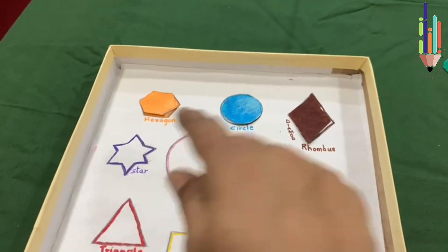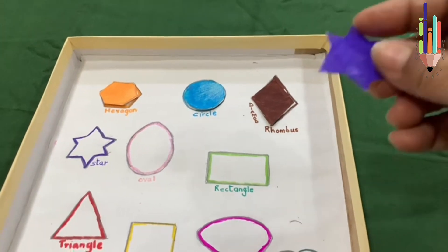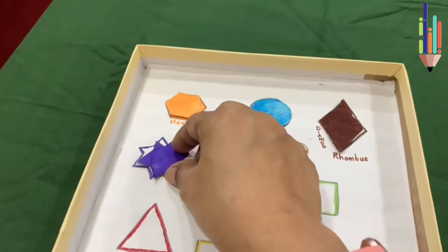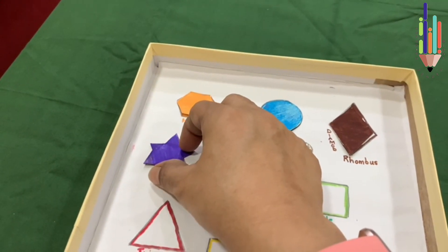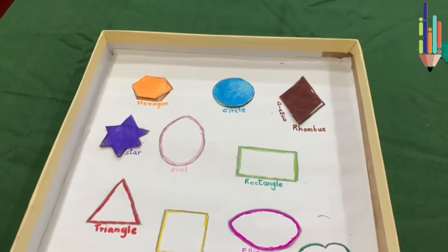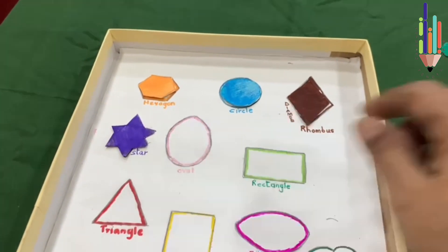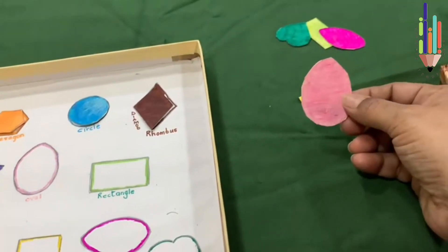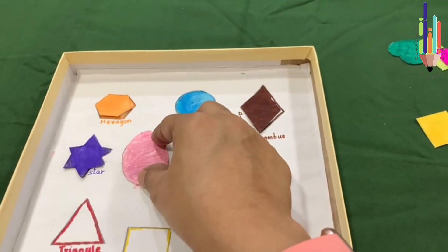The next one is a star which is purple. Here, so I got the star and I place it on the star. Now I've got an oval which is pink, so I take the pink and I place the oval on top of this shape.